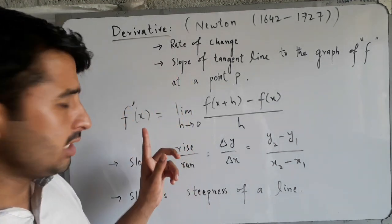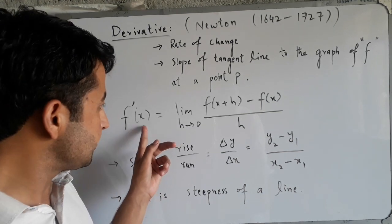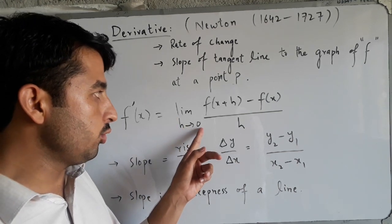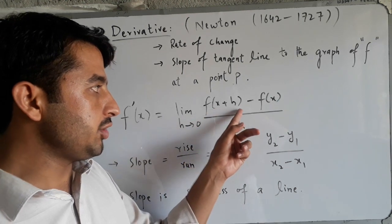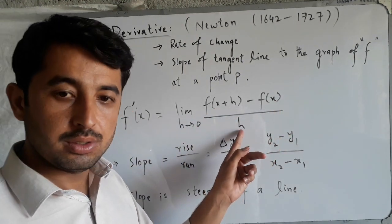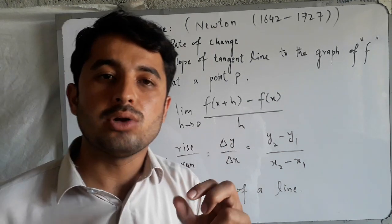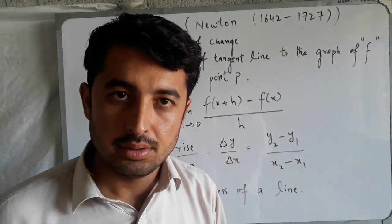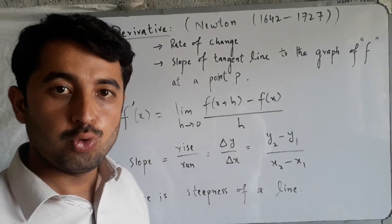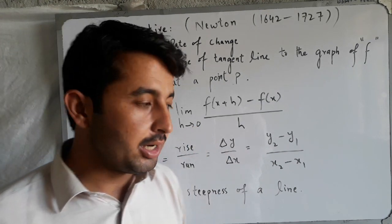Mathematical form jo hai woh hai: f'(x) is equal to limit, h approaches to zero, of [f(x+h) minus f(x)] divided by h, where h is a small tolerance which approaches to zero and becomes smaller and smaller. So let's study about slope.